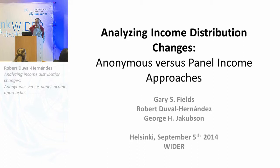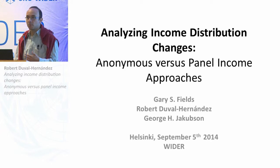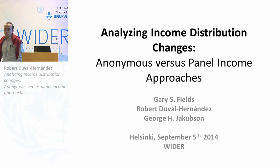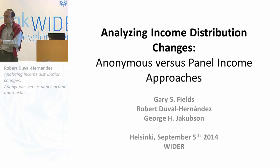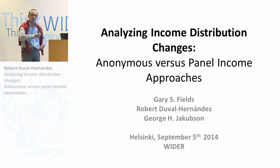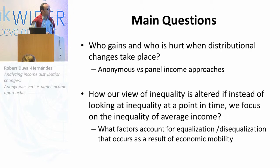The first question is: when we want to answer who gains and who loses when there is a change in the income distribution, there are several approaches you could take, but two popular approaches are what we call the anonymous approach and what we call the panel income approach. The anonymous approach is just your standard comparison of inequality measures in period zero versus inequality in period one — say inequality rose, it fell, or the income share of the poorest fell or rose — while the panel income approach is something I'll get into in the context of this paper.